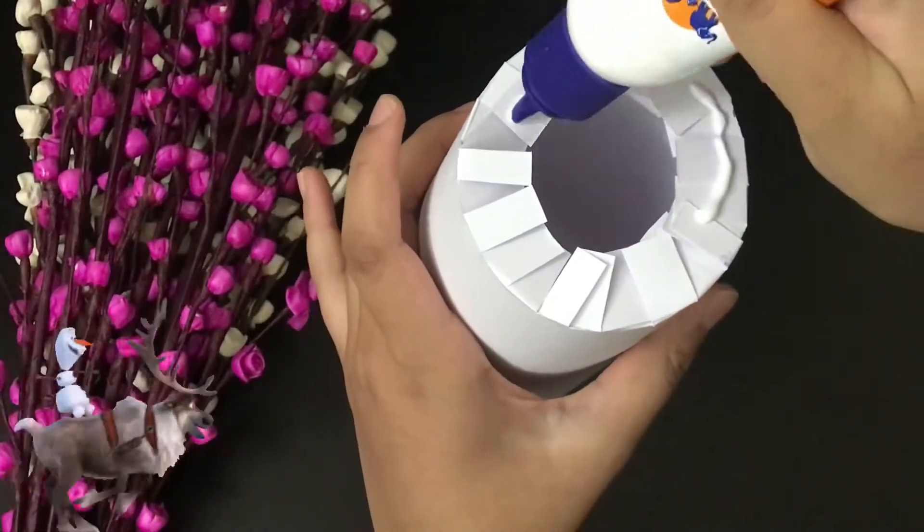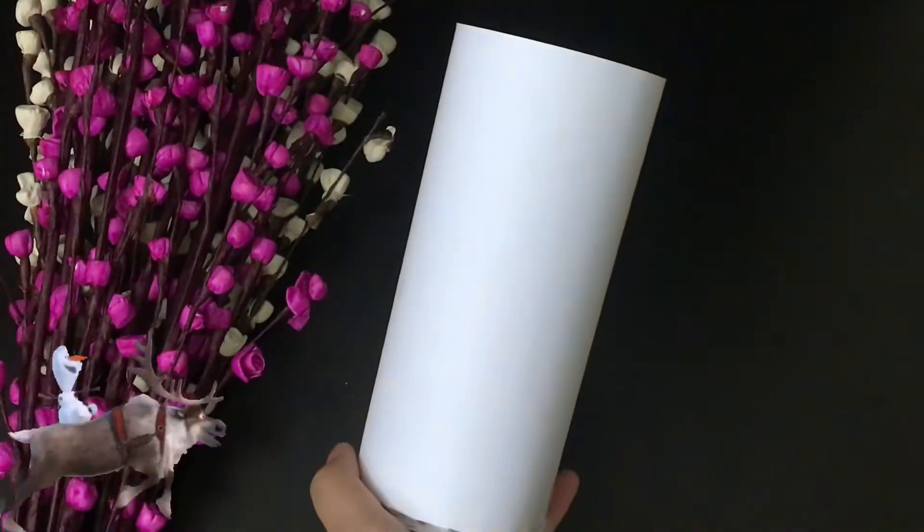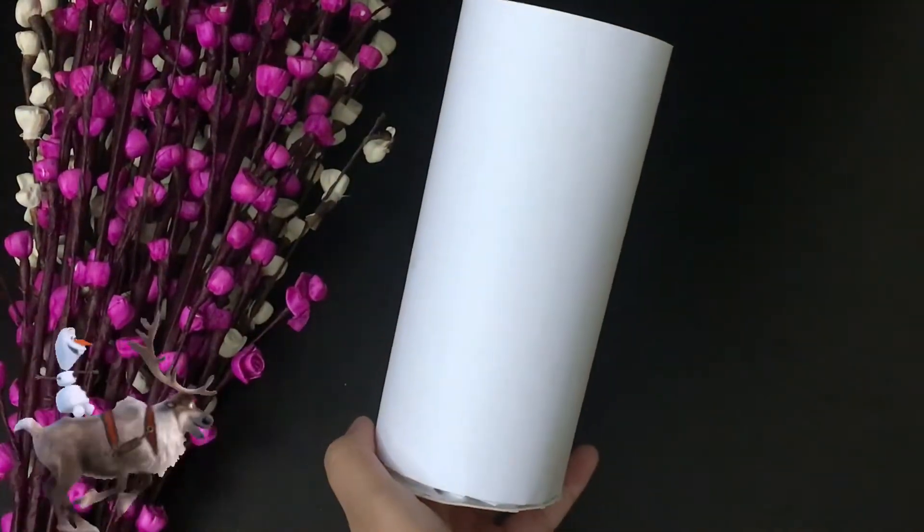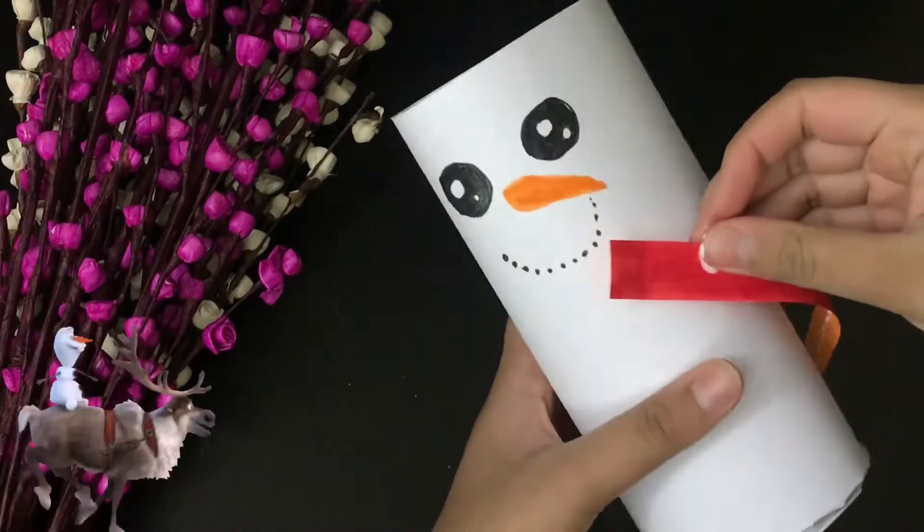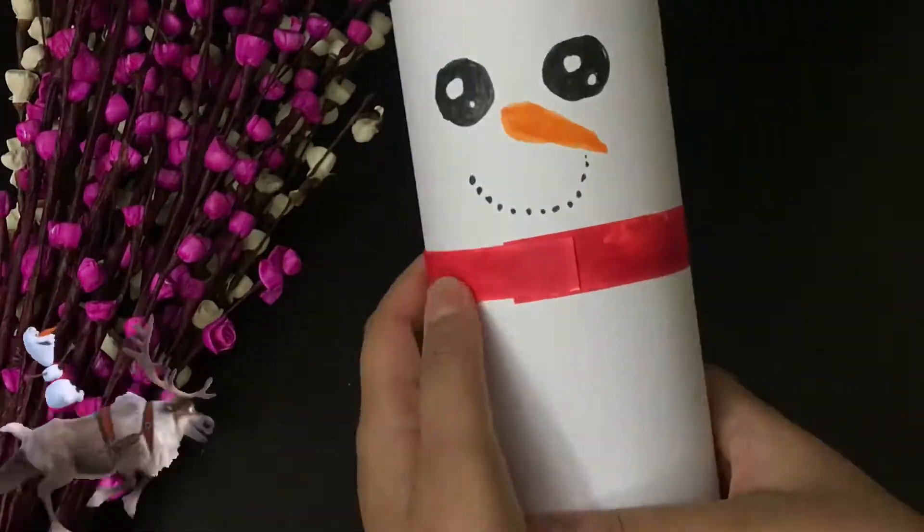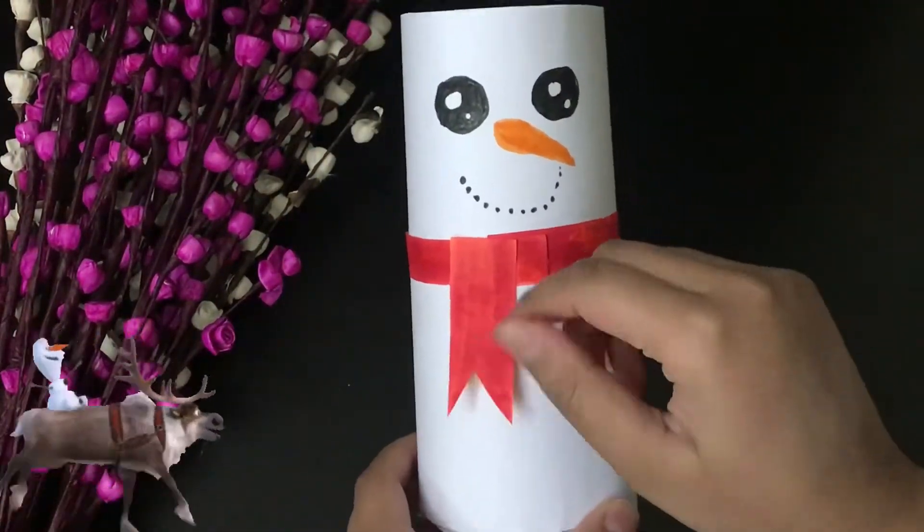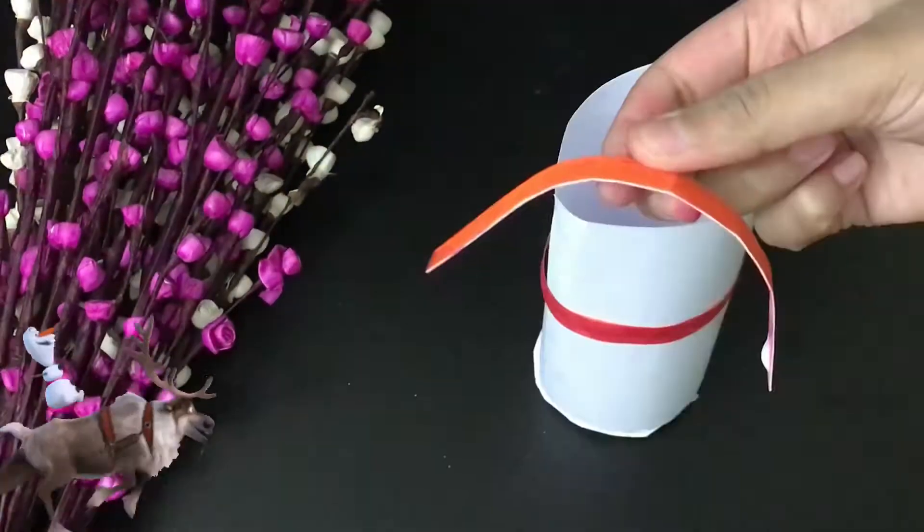After that, paste a cardboard circle on it. Add some snowman details. Don't forget to paste the scarf as well. Make sure to apply glue only at the top and not bottom.